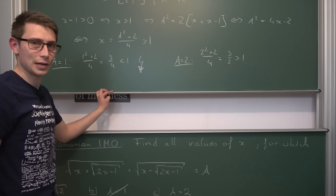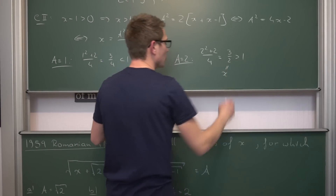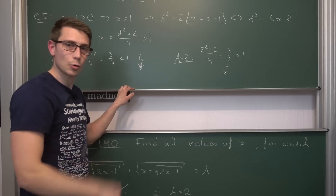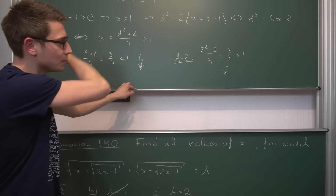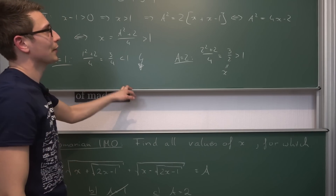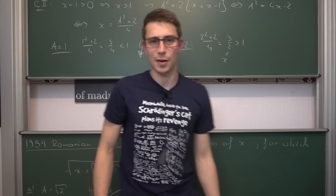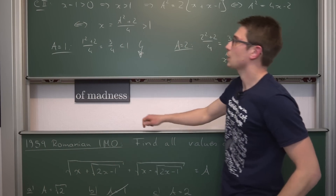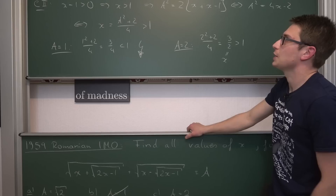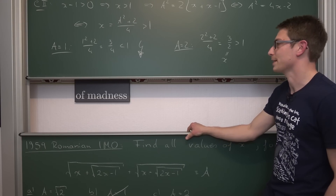And yeah, we have done it. So part a) works — for all x in [1/2, 1], a equals the square root of 2. Part b) doesn't work — there is no x for which a equals 1. Part c) does work — at x equals 3/2, a equals 2. I really enjoyed this competitive math problem. I think it's one of my favorites I've done recently, next to the golden ratio one.